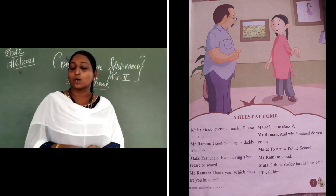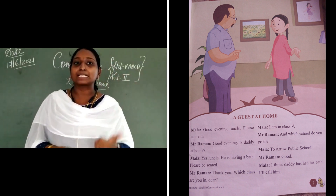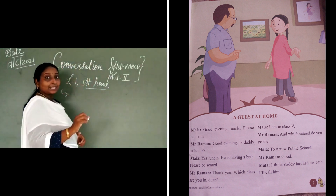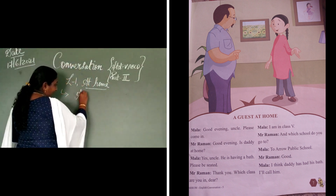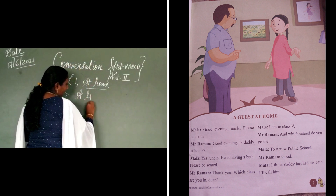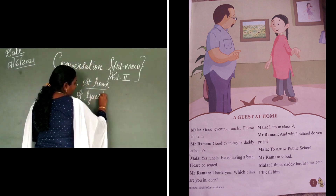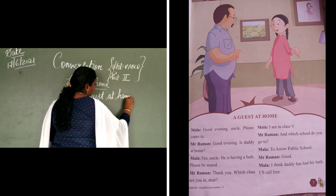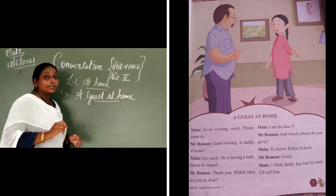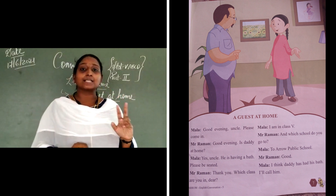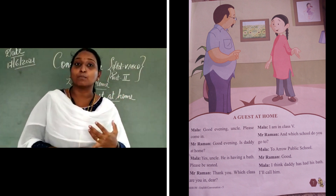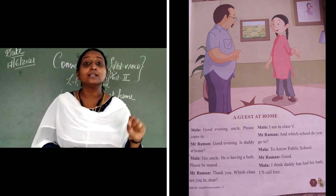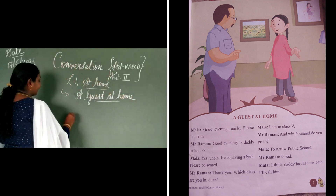Children, just take out your conversation book, page number 7. The first topic of today is A Guest at Home. Now here 2 characters have been mentioned. One is Mala and the second one is Mr. Raman.